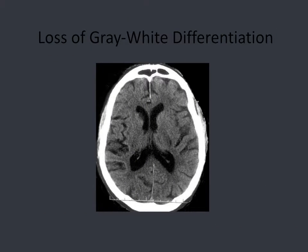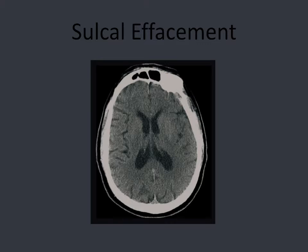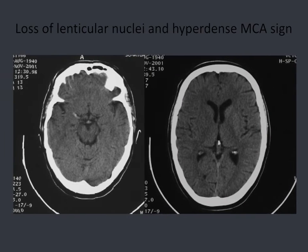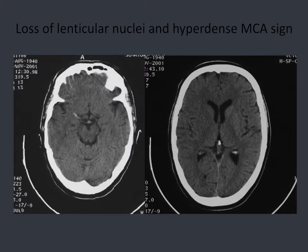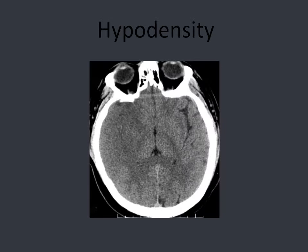Along with the hyperdense MCA sign, you can sometimes see clot further out — the MCA dot sign. On CT you may also see loss of gray-white differentiation, sulcal effacement where definition is blurred on one side compared to the other, or loss of differentiation of the lenticular nuclei, appearing fuller and less well-defined. A frank hypodensity is another sign. If a patient is supposedly within the first three hours but shows frank hypodensity, be suspicious — stroke typically begins to appear on CT four to six hours after symptom onset — and clarify last seen normal.